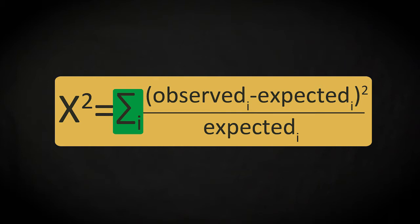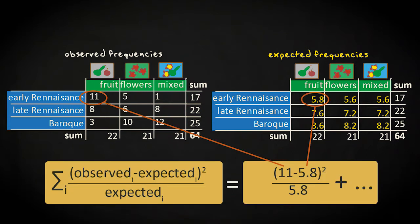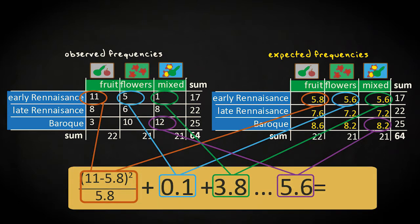Let's calculate the chi-squared statistic for this particular case. Calculating observed minus expected per cell, squaring that value, dividing by expected, and then summing all the values. This results in a value of 14.5.